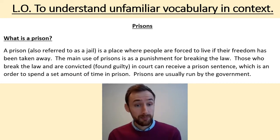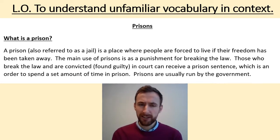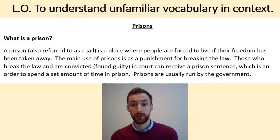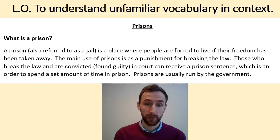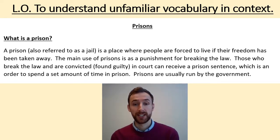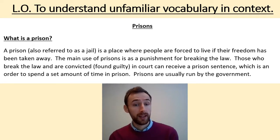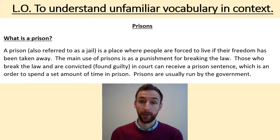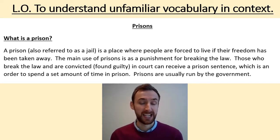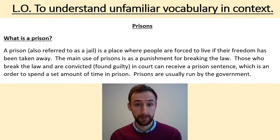Prisons. What is a prison? A prison, also referred to as a jail, is a place where people are forced to live if their freedom has been taken away. The main use of prisons is as a punishment for breaking the law. Those who break the law and are convicted — found guilty — in court can receive a prison sentence, which is an order to spend a set amount of time in prison. Prisons are usually run by the government.